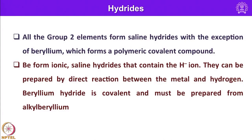All the group 2 elements form saline hydrides, that is ionic hydrides, with the exception of beryllium, which forms a polymeric covalent compound. It forms a one-dimensional polymeric beryllium hydride chain, while the heavier group 2 elements form ionic saline hydrides that contain the H minus ion.